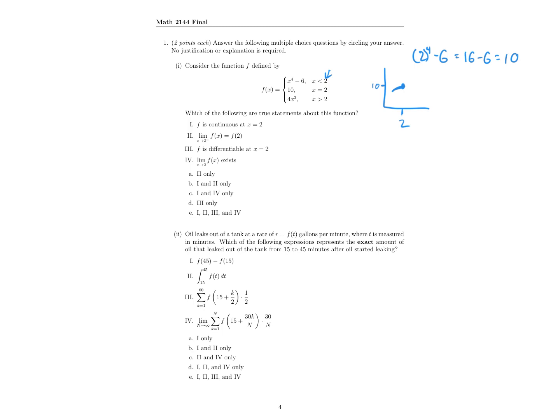So that means it's actually coming in and joining on that point. Because that first function in the piecewise function x to the 4th minus 6, because it is 10 when it gets close to 2 and the actual value of 2 is 10. If we look down here, we can see that this statement, statement 2, says as x approaches 2 from the left, for f of x, that limit as f of x approaches 2 from the left is equal to f of 2. That statement here would be correct. So we have 2 is right.